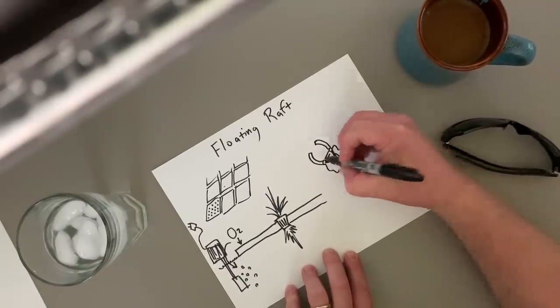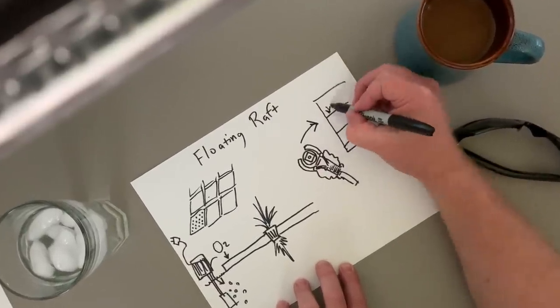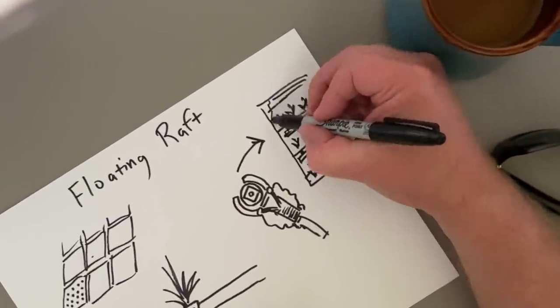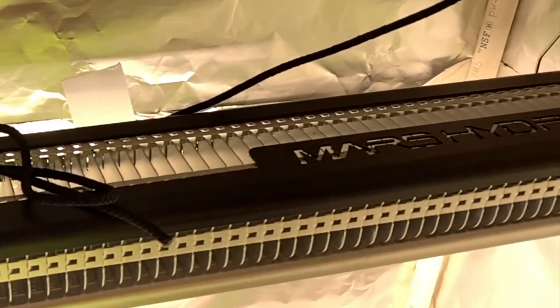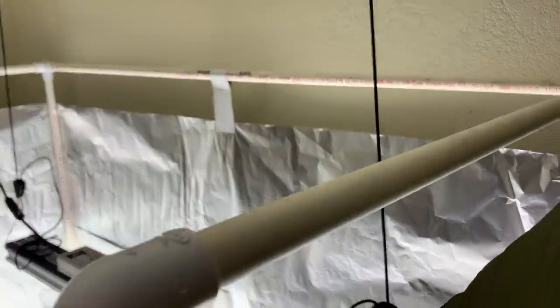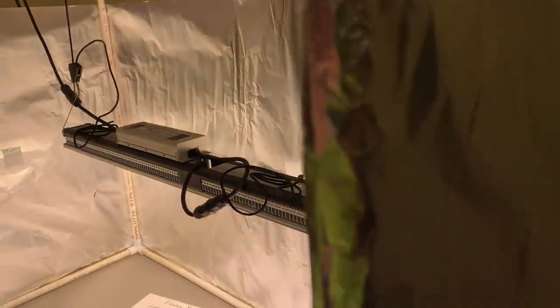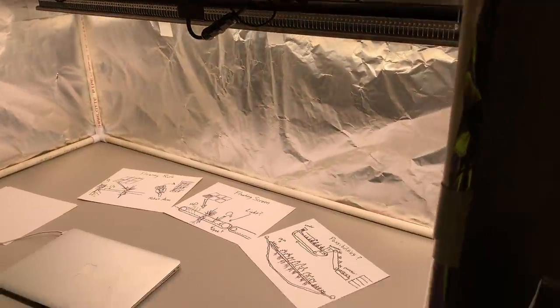One time I saw a video of a vertical farm using robot arms to move net cups. This video is sponsored by Mars Hydro. They sent me a light so bright I had to build a deflector shield.